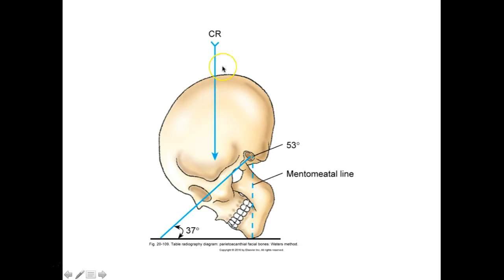When doing the Waters prone, the CR comes through with the mental-meatal line perpendicular, forming a 37-degree angle. You generally cannot get in trouble for exceeding 37 degrees — if it's steeper, it's okay; if it's less, that's a problem. Make sure you get at least 37 degrees — you'll need to know these exact numbers.